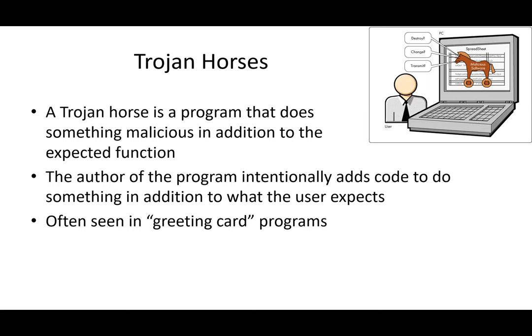The first animal in our zoo of malware is the Trojan horse. A Trojan horse is pretty straightforward: people write a program to do something you want done, and while it's doing what you want, behind the scenes it's also doing something malicious.